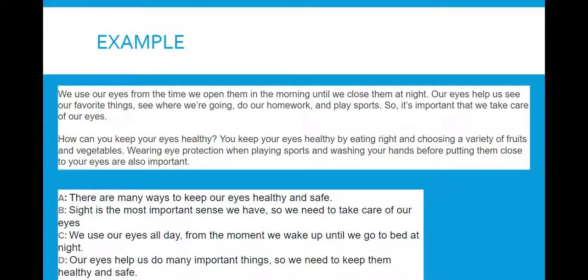So if we're thinking about the main idea of these two paragraphs, we have four choices that we're going to choose between. A says there are many ways to keep our eyes safe and healthy. B says sight is the most important sense we have, so we need to take care of our eyes. C says we use our eyes all day from the moment we wake up until we go to bed at night. And D, our eyes help us do many important things, so we need to keep them safe and healthy. Think to yourself for a moment about what both paragraphs were about. And you'll notice that all of these choices are true statements. We read about all of them in the story, but only one of them has enough of the key details to be what this text is mostly about.